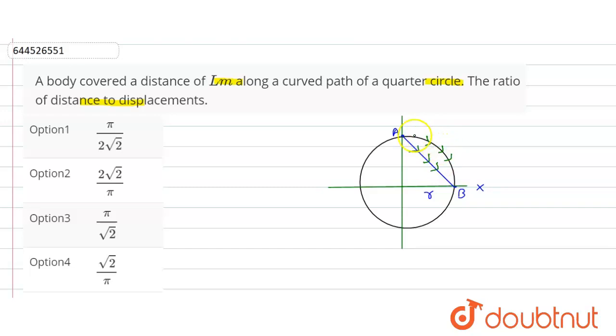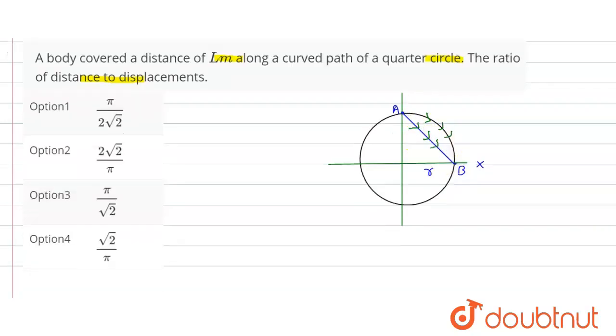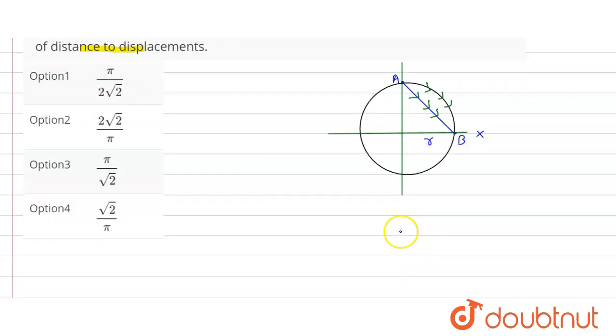Okay, so distance is here. How much? Distance d is equal to 2πr circumference upon 4. For quarter, so this will be how much? This will be πr upon 2.